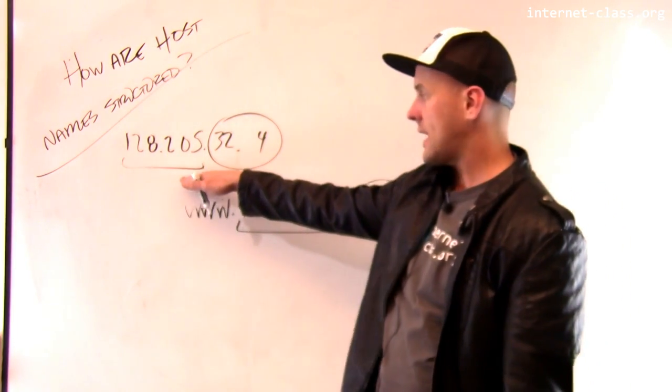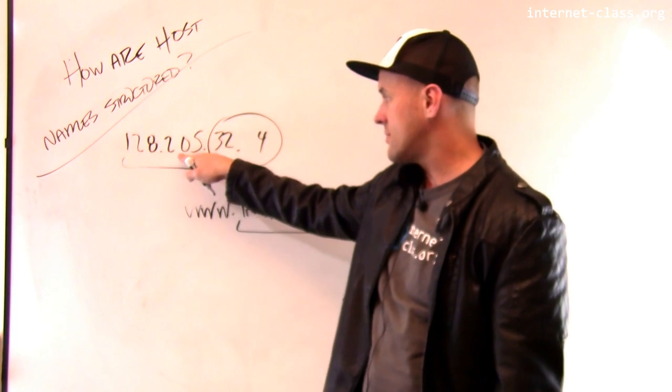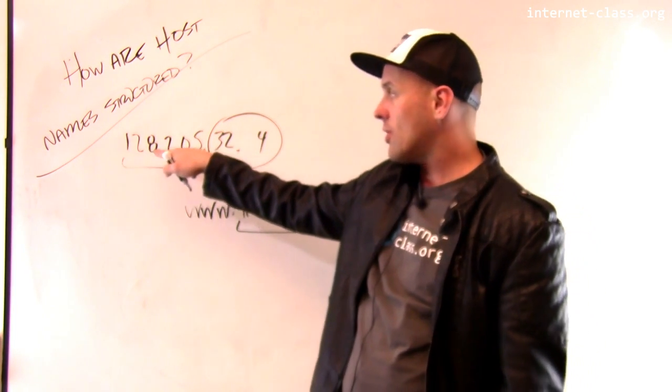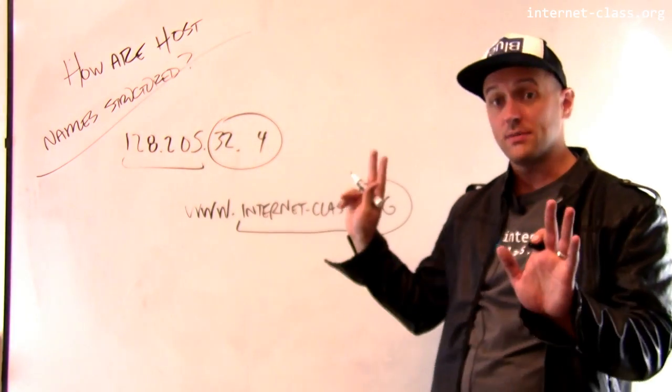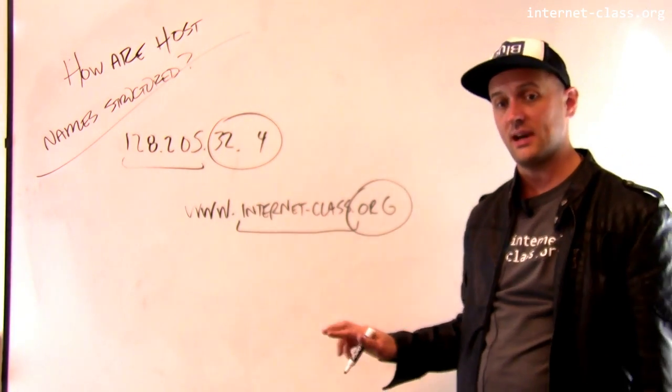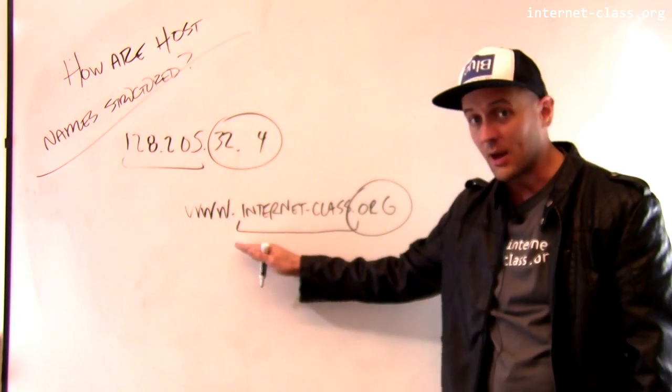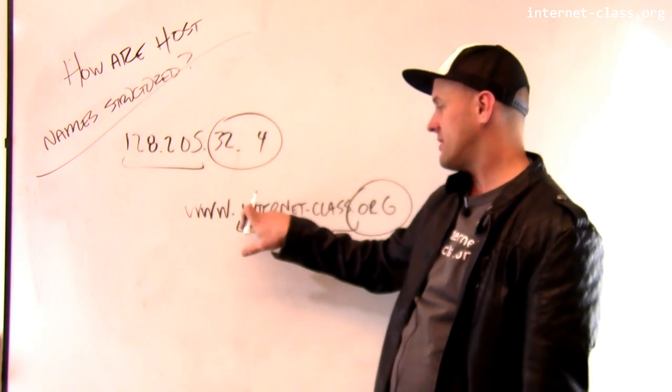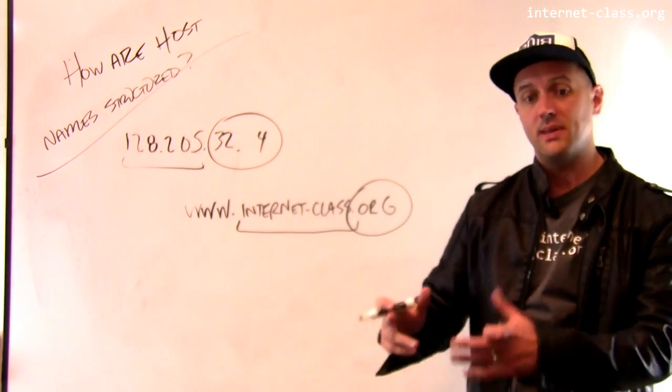So this is kind of similar to the IP address, again, just in the opposite direction. So UB has the ability to assign all of the IP addresses that start with 128.205.whatever. That's their IP address namespace, and there's 65,000 addresses here. I have the ability to create any host names that I want to, as long as they end with .internet-class.org. So I've already created www. That's the main website.